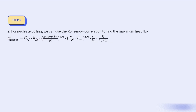Step 2: For nucleate boiling, we can use the Rohsenow correlation to find the maximum heat flux Qmax, equal to Csf times Hfg times G times (rho_L minus rho_V) times sigma divided by rho_V, raised to 1/2, times CPL times Tsat to the 3/2, times (mu_L divided by mu_V) times L³ divided by Hfg times CPL.